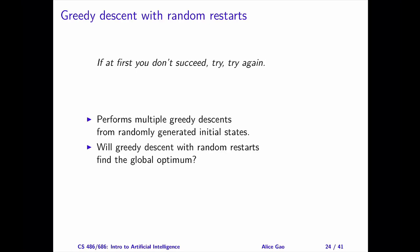Students have raised an interesting question: we know that greedy descent can determine whether a state is a local optimum by comparing it with its neighbors — but how does greedy descent determine whether a state is a global optimal or not? I'll leave this as a thought question. The answer differs depending on whether we consider a constraint satisfaction problem or a pure optimization problem.